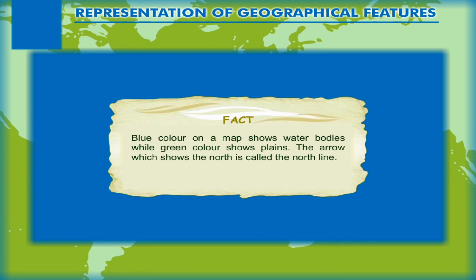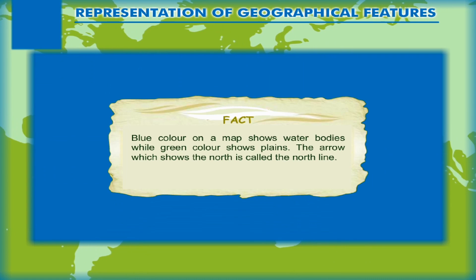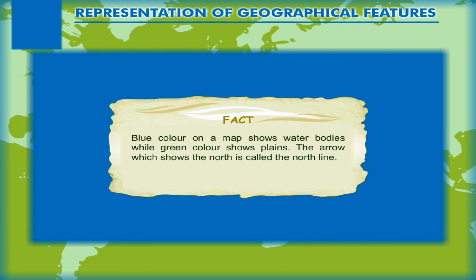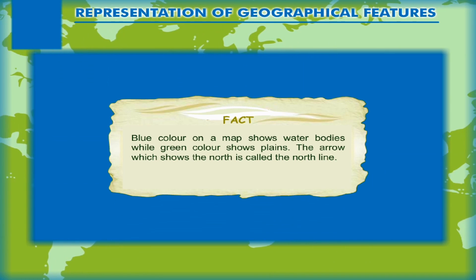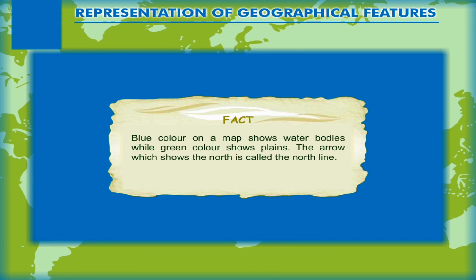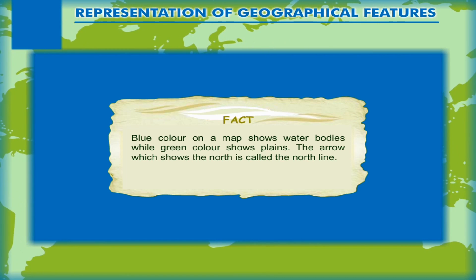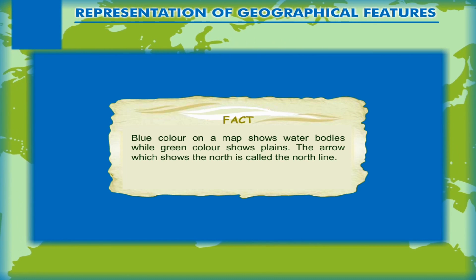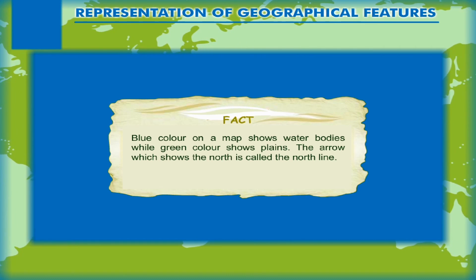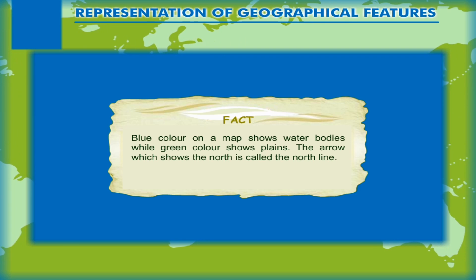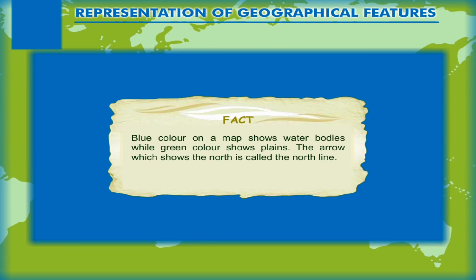Blue colour on a map shows water bodies while green colour shows plains. The arrow which shows the north is called the north line.